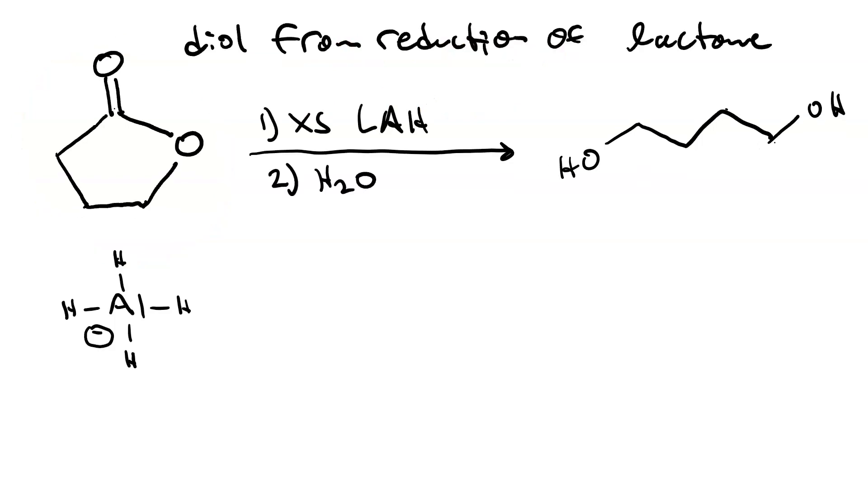Let's look at the mechanism. In the first step, the aluminum hydride does nucleophilic attack on the carbonyl carbon, which exceeds its octet. So we change a pi bond to a lone pair. And now the carbonyl oxygen has become this alkoxide.